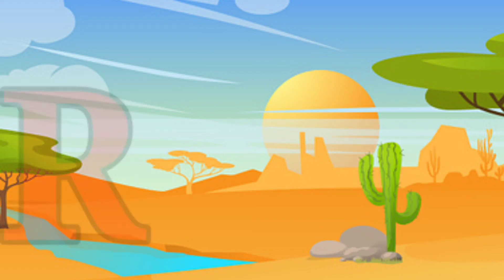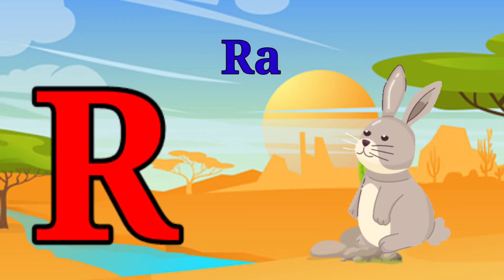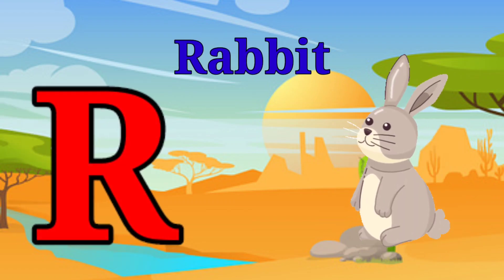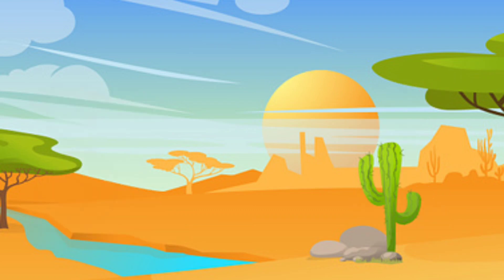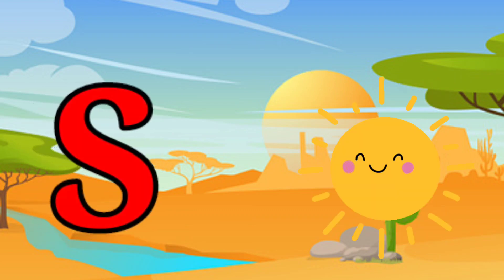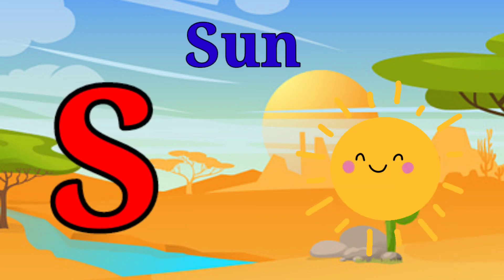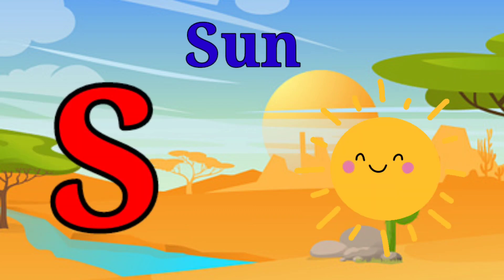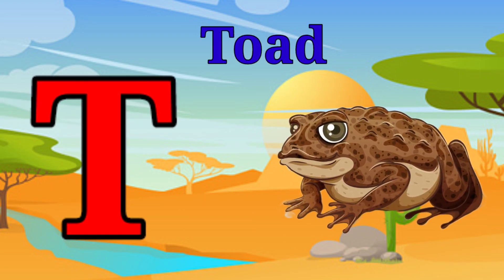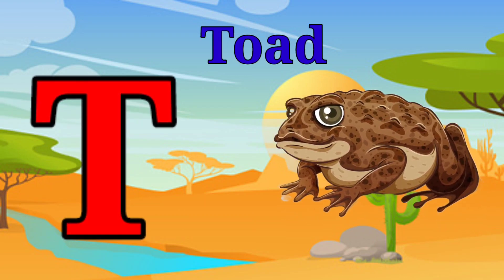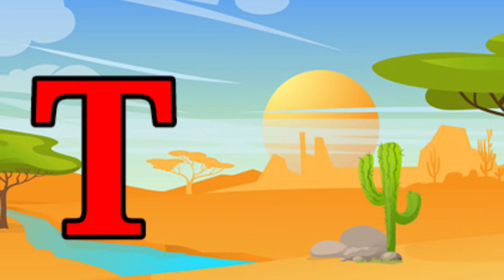R is for rabbit, r-r-rabbit. S is for sun, s-s-sun. T is for toad, t-t-toad.